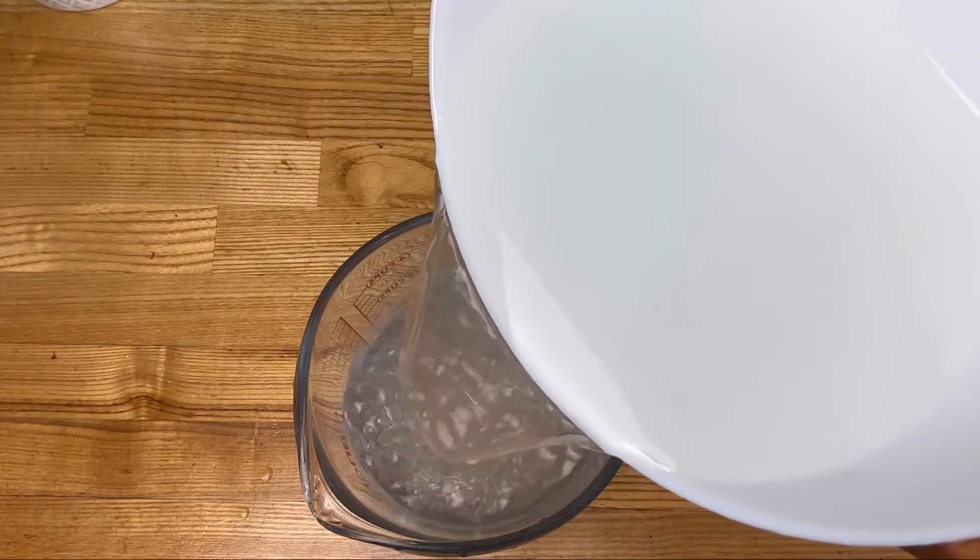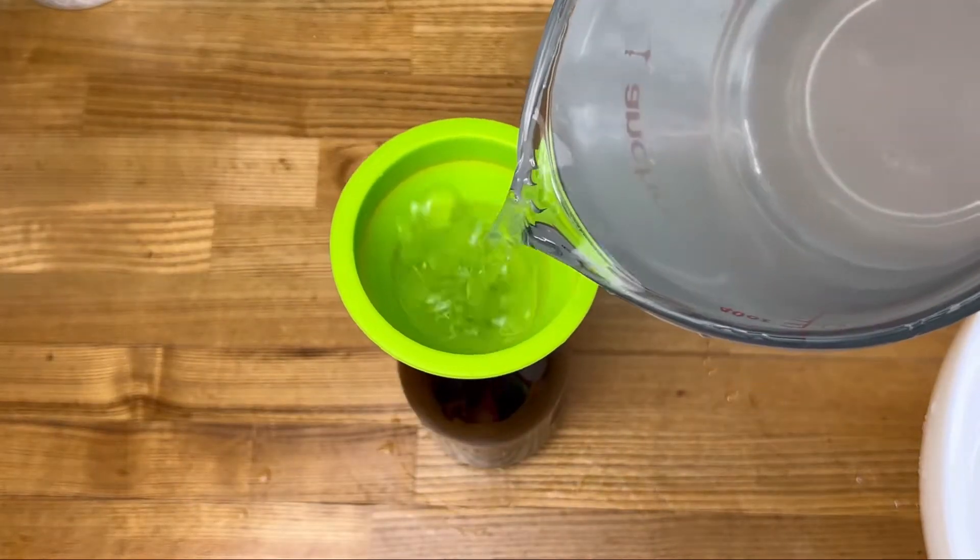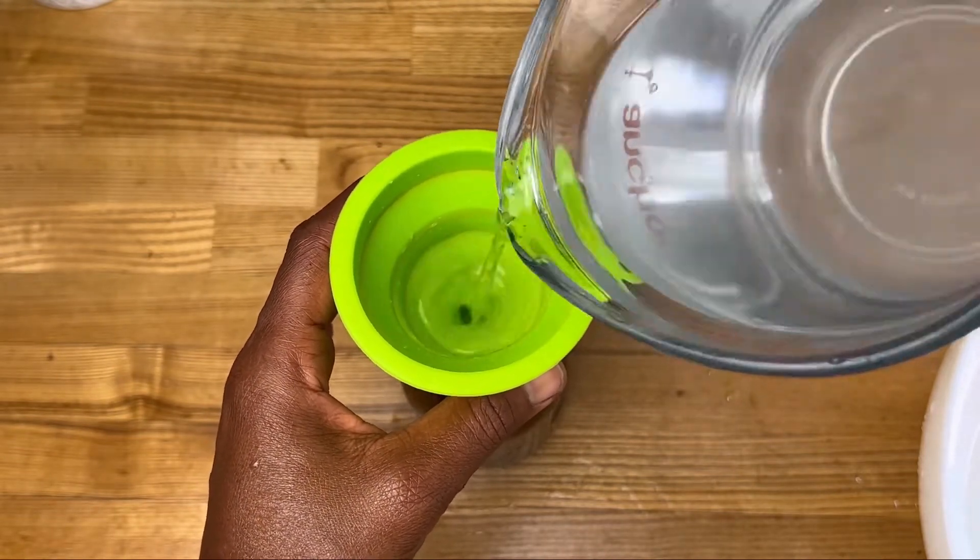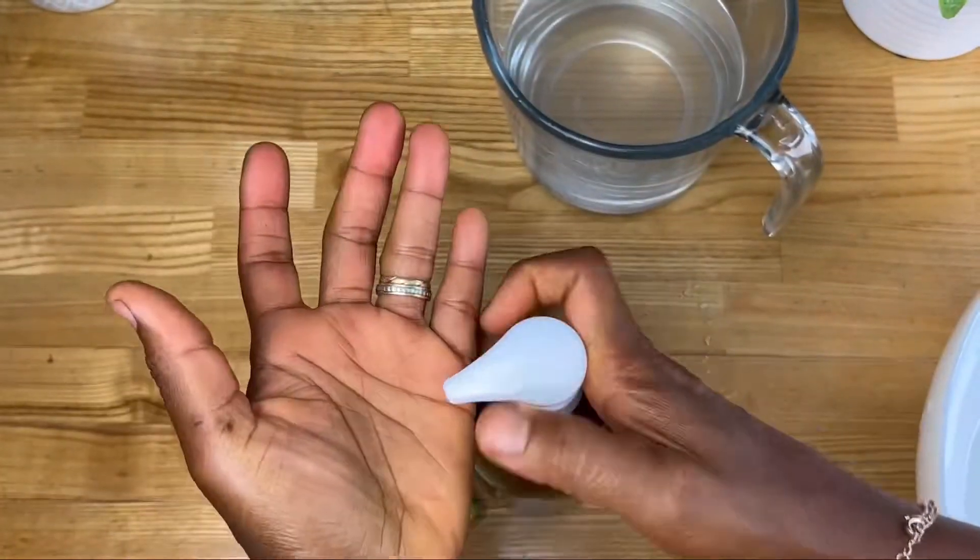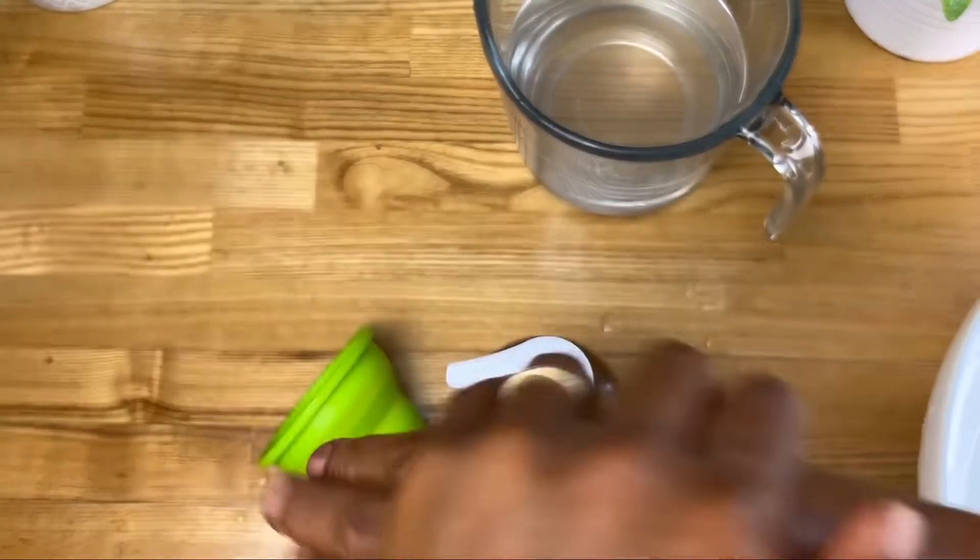Now, how do we make this? We make this by using one ratio of magnesium flakes, magnesium chloride flakes, to one ratio of water - obviously filtered, boiled water. Apply this and just let this dissolve. And once every crystal is dissolved, put it into a bottle, a spray bottle, or a palm bottle.